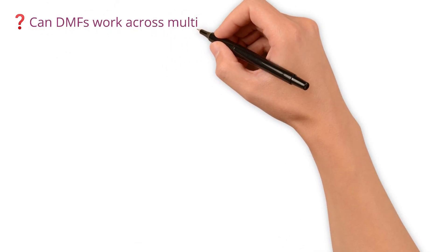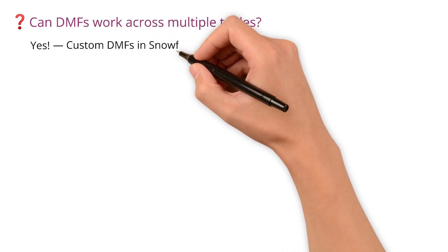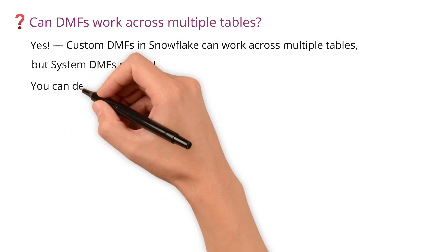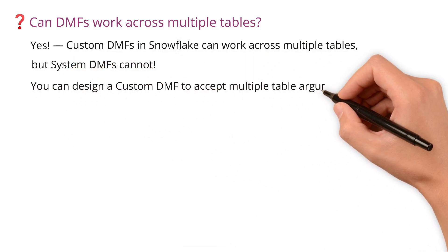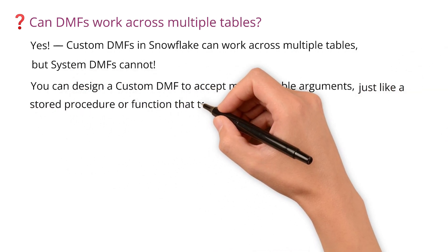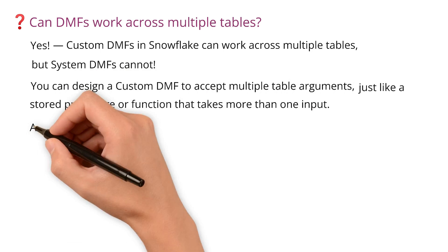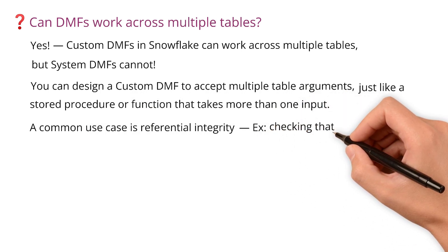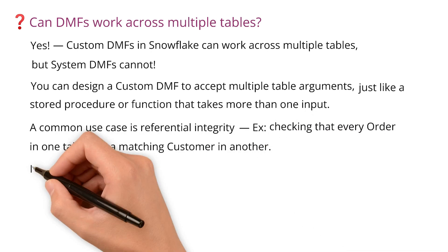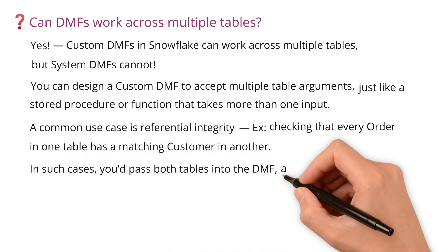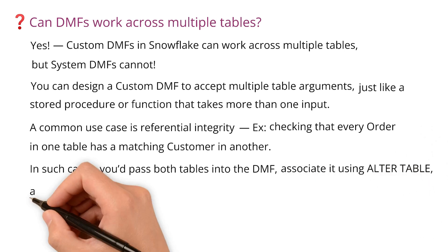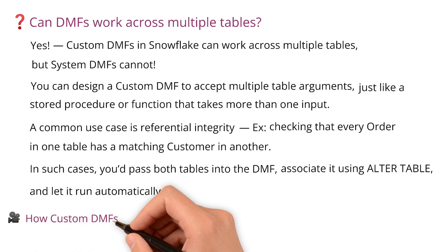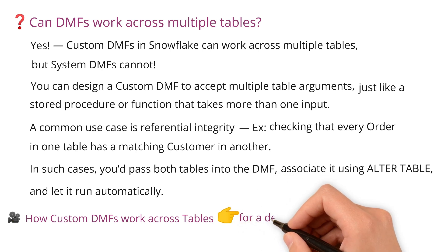Can DMFs work across multiple tables? Yes — custom DMFs in Snowflake can work across multiple tables, but system DMFs cannot. You can design a custom DMF to accept multiple table arguments, just like a stored procedure or function that takes more than one input. A common use case is referential integrity — for example, checking that every order in one table has a matching customer in another. You'd pass both tables into the DMF, associate it using ALTER TABLE, and let it run automatically.